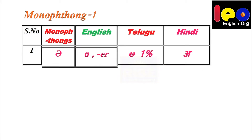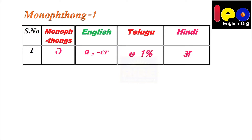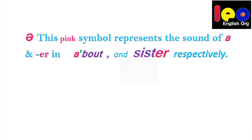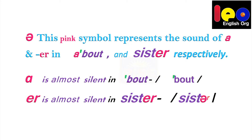In English, this particular symbol stands for the sound of A — light A. A must be 1%, not A 100%. This pink symbol represents the sound of A in 'about.' It means A is almost silent in the word 'about.' You should not pronounce it as 'about'; we have to pronounce it as 'about.'